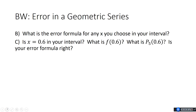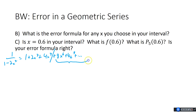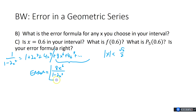So 1/(1 - 2x²) equals 1 + 2x² + 4x⁴ + 8x⁶ + 16x⁸ + etc. We stopped at 4x⁴. So how much is the error? It's everything else, and everything else creates a new geometric series. As long as |x| < √2/2, the error is the rest of the series — a geometric series with first term 8x⁶, still multiplying by 2x² each time. That is the error formula because the rest of it will be geometric.